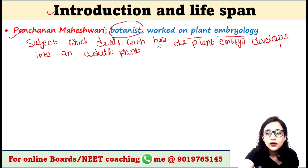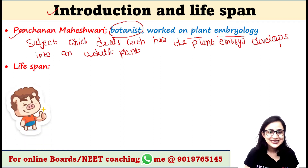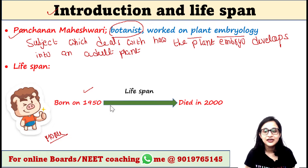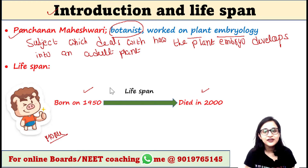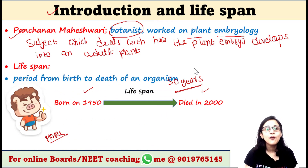Next we need to learn what is lifespan. It is the easiest concept. Suppose this is our Manu. He was born in the year 1950 and died in the year 2000, so his lifespan is 1950 to 2000, that is 50 years. Hence the period from birth to death of an organism is called lifespan.